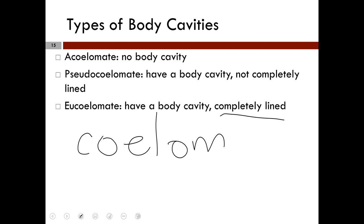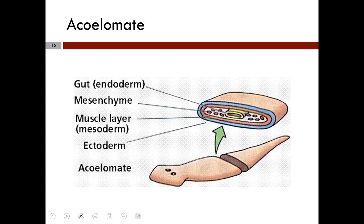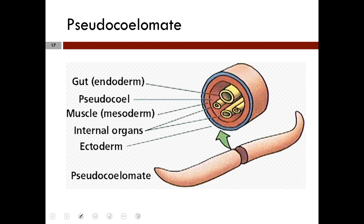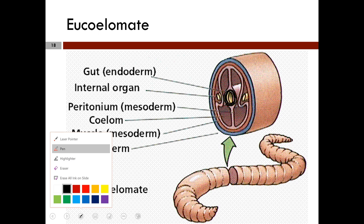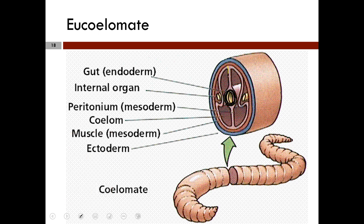The pseudocoelom was one of the most important early animal adaptations — a critical step in the evolution of larger, more complex animals. This shows acoelomates with no body cavity; pseudocoelomates with an incompletely lined body cavity; and coelomates — it's a tube within a tube, with the gut inside the body cavity.